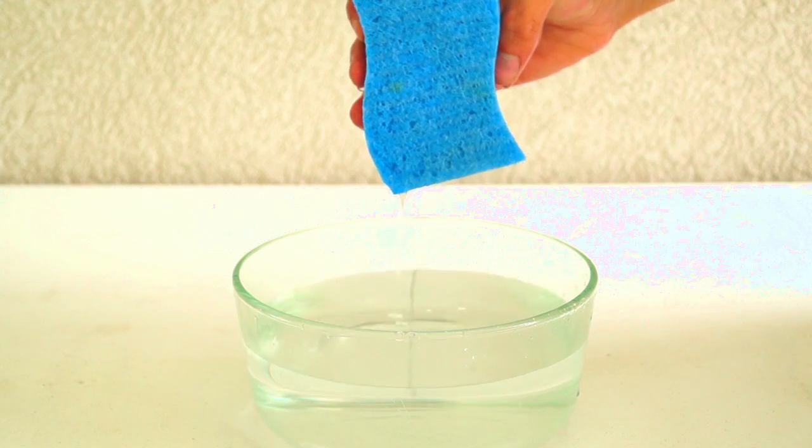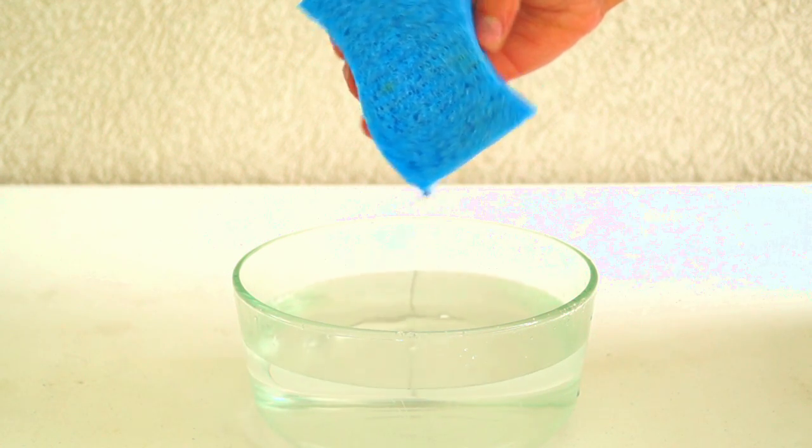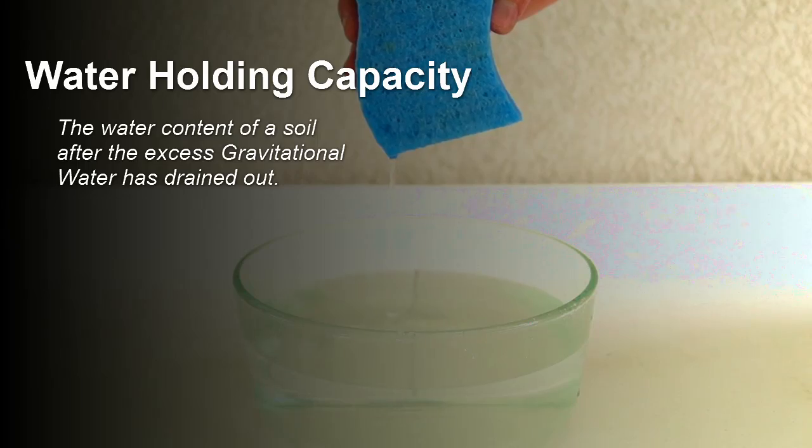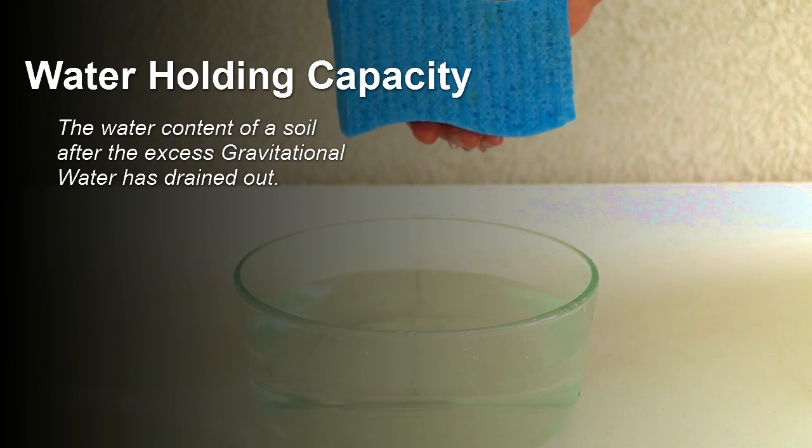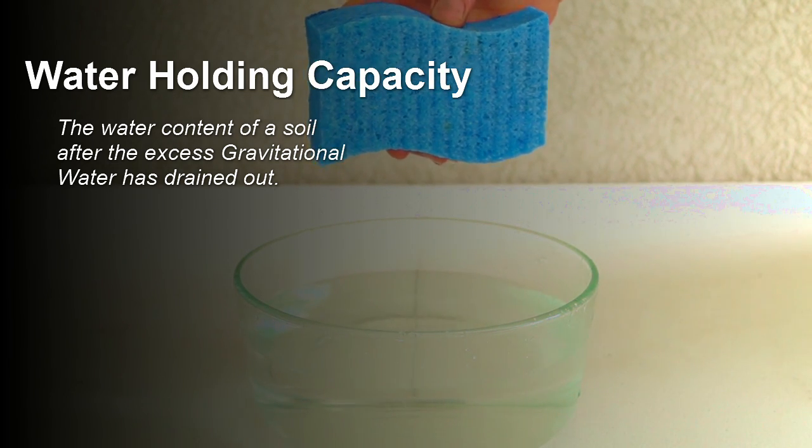You will notice that there reaches a point when the water stops draining from the sponge. This is known as water holding capacity, defined as the water content of a soil after the excess gravitational water has drained out.